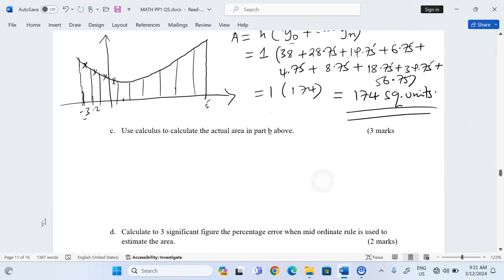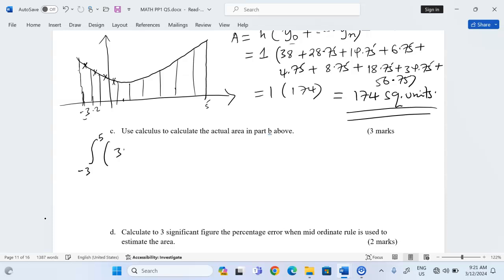Use calculus to calculate the actual area of part B. We can see that from negative 3 all the way to 5, the area is lying on the same side of the x-axis. That means we're just going to integrate once. We're going to integrate the function all the way from negative 3 to 5. The function is 3x squared minus 2x plus 5 with respect to x.